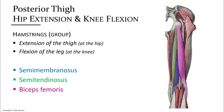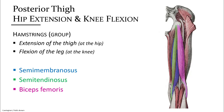On the posterior thigh is a group of three muscles that extend at the hip as well as flex the knee. This group is called the hamstrings. They all originate at the ischial tuberosity — the bone you are sitting on — then extend either laterally or medially to attach onto the tibia. The individual muscles are semimembranosus and semitendinosus, which attach medially, and biceps femoris, another two-headed muscle, which attaches laterally.